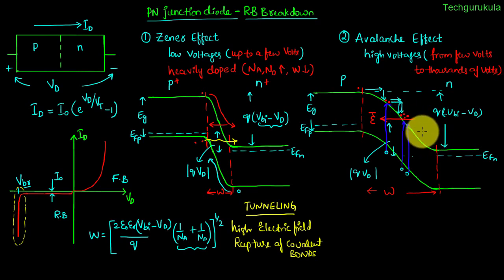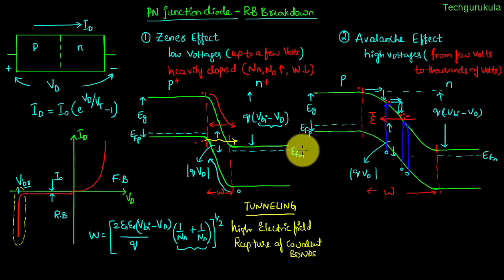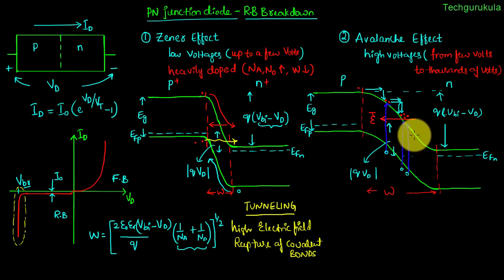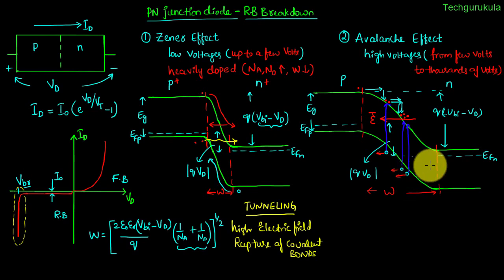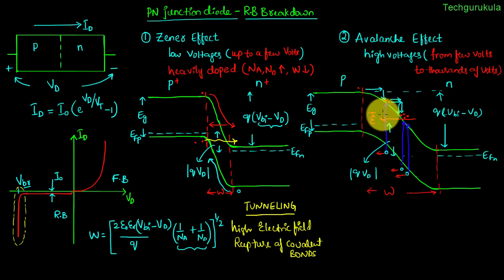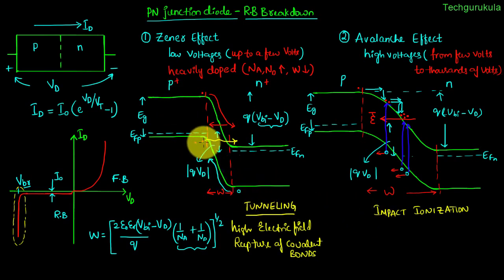The number of electrons flowing through the P-N junction increases rapidly. When the multiplication factor becomes large enough, the current drastically increases and you see a steep rise in the IV characteristics at the critical voltage — this is avalanche breakdown. The holes generated are also accelerated in the opposite direction. The process of an electron gaining kinetic energy to ionize an atom by generating an electron-hole pair is called impact ionization, and in Zener effect the analogous process — where the electric field breaks covalent bonds — is called field ionization.